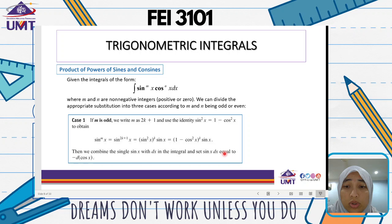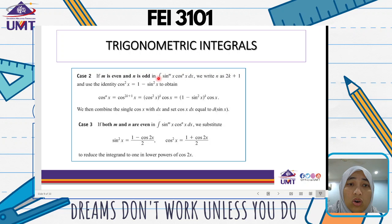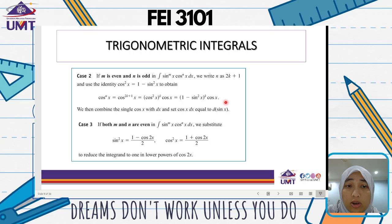Case 2: if m is even and n is odd, in the integration of sine to the power of m times cos to the power of n dx, we write n as 2k plus 1 and use the identity cos squared x equals 1 minus sine squared x, to obtain cos to the power of n equals cos squared x to the power of k times cos x, which equals 1 minus sine squared x to the power of k times cos x. We then combine the single cos x with dx and set cos x dx equal to d(sin x). Note that Case 1 gives negative d, while this one is positive d.